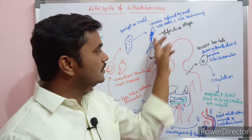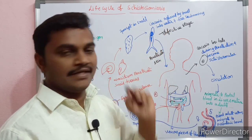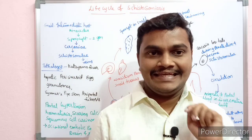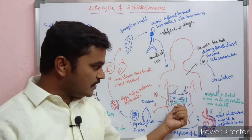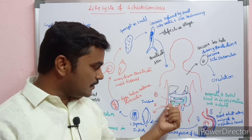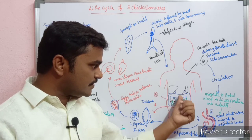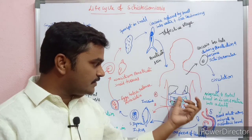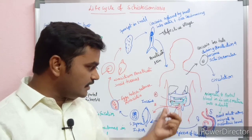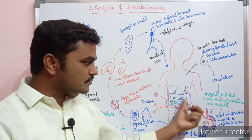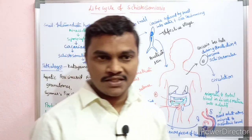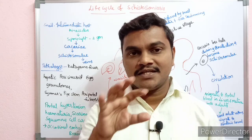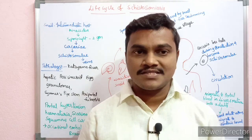The infective stage is the cercariae, which contains a bifurcated tail — a particular distinguishing region. These are the normally pathogenic phases. In this pathogenic phase, it can cause disease in the intestinal region and can cause different diseases. This is the condition caused by Schistosoma haematobium adult worms, and the disease is called schistosomiasis.